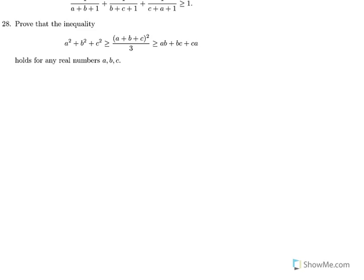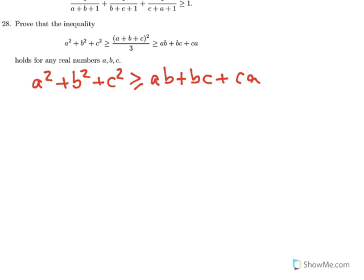Remember the famous inequality that we proved previously: a squared plus b squared plus c squared is greater than or equal to ab plus bc plus ca. This inequality is valid for any real numbers a, b, c.